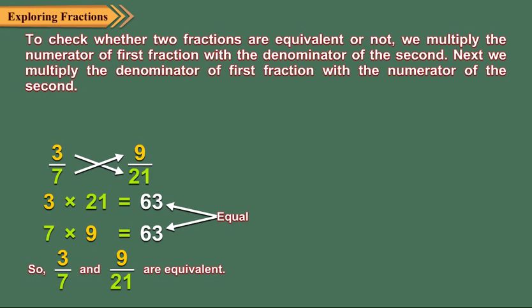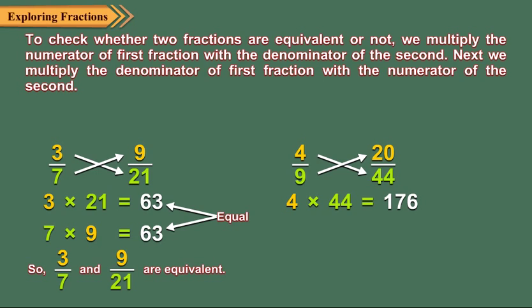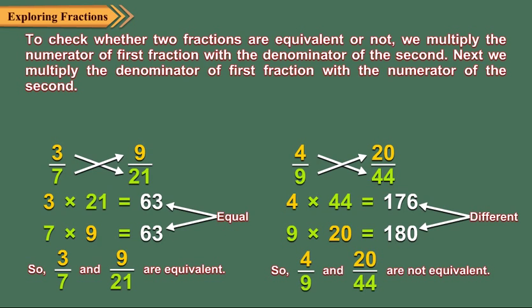Again, consider four upon nine and twenty upon forty-four. The product of four and forty-four is one hundred seventy-six. The product of nine and twenty is one hundred eighty. So, four upon nine and twenty upon forty-four are not equivalent.